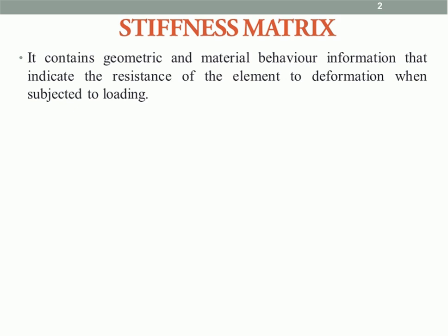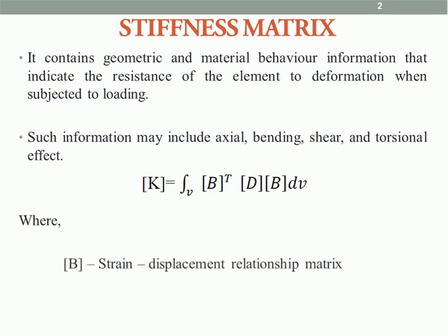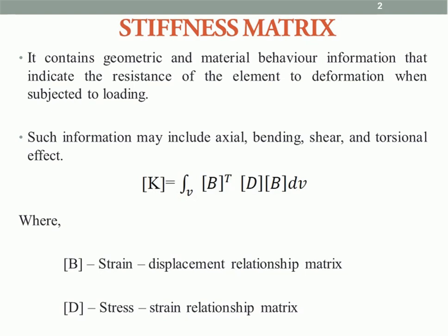For a finite element with different types of loads applied — such as axial loading, bending loading, or shear loading — the resistance depends on the material behavior and the geometry. The general representation for the stiffness matrix is: K equals the integral of B-transpose D B dV, where B is the strain-displacement matrix and D is the stress-strain relationship matrix. For a one-dimensional element, these matrices will be detailed.